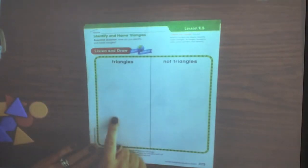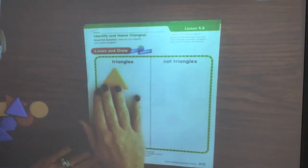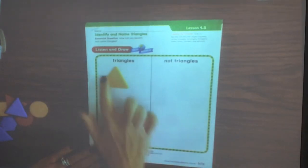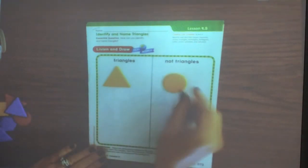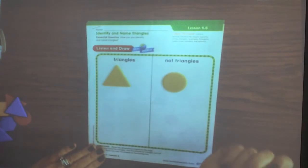So we want triangles over here. Is this a triangle? Yes, it has one, two, three sides and three vertices. That's where the lines meet or intersect and make a corner. So that's a triangle. This is not a triangle. We know that it's a circle.